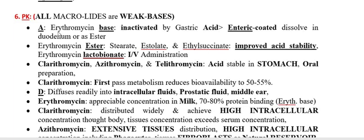For oral preparations, erythromycin is formulated as salt forms to improve acid stability. These include erythromycin stearate, erythromycin estolate, and erythromycin ethylsuccinate. The estolate and esterolate forms can produce GI toxicity. Erythromycin lactobionate is used for intravenous administration.